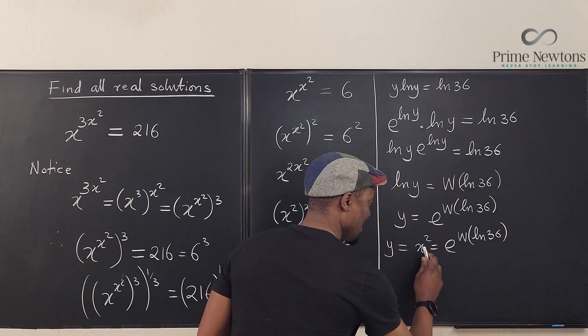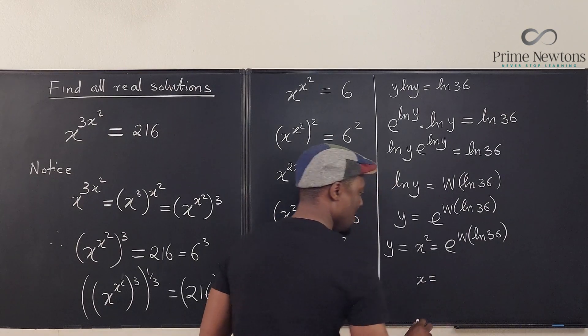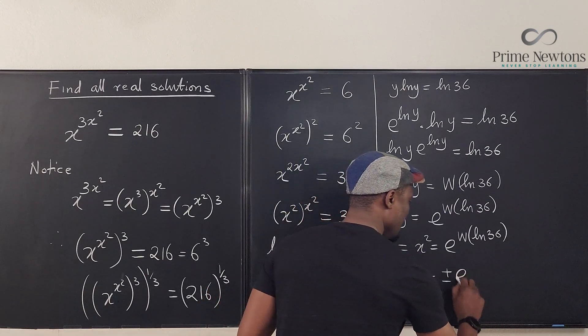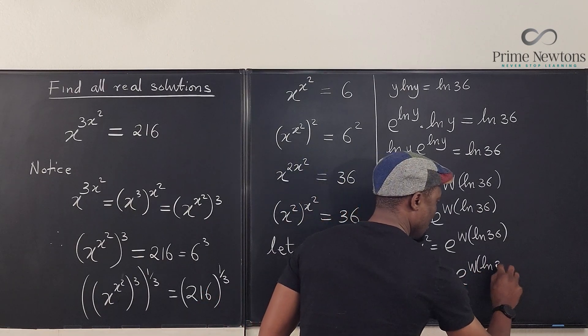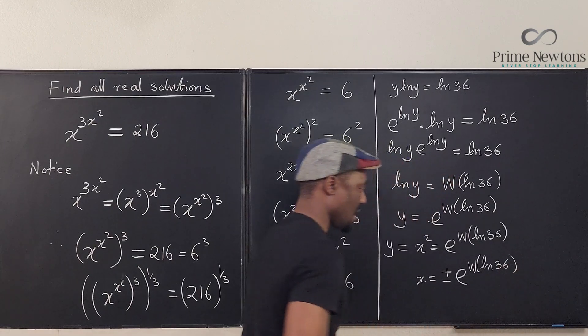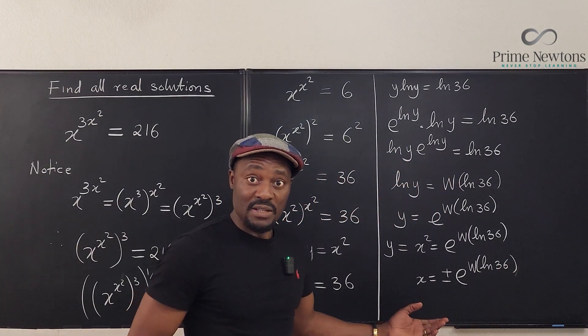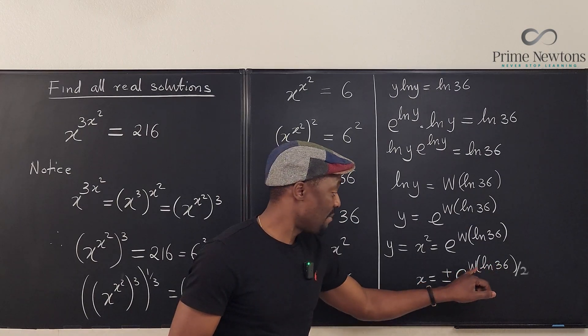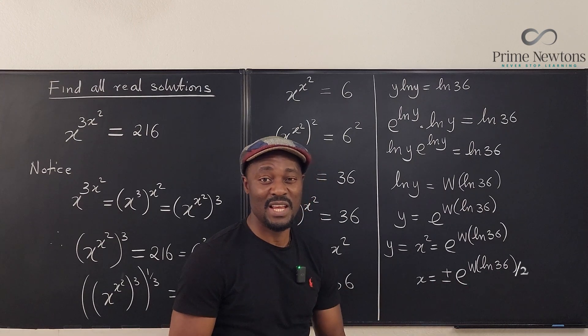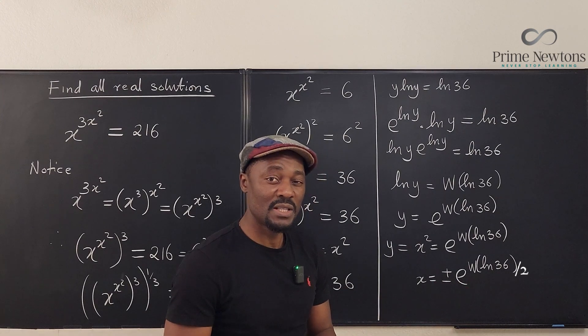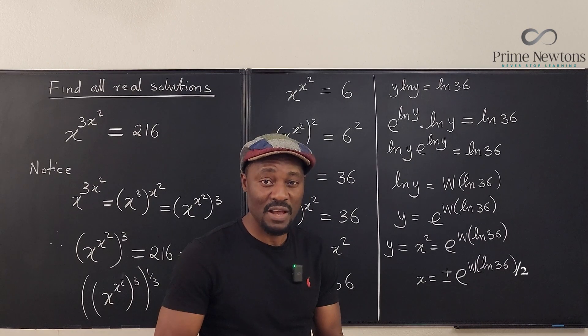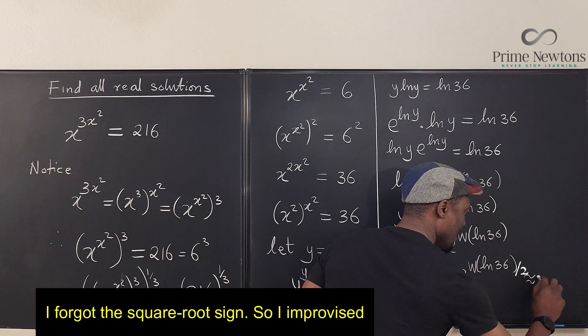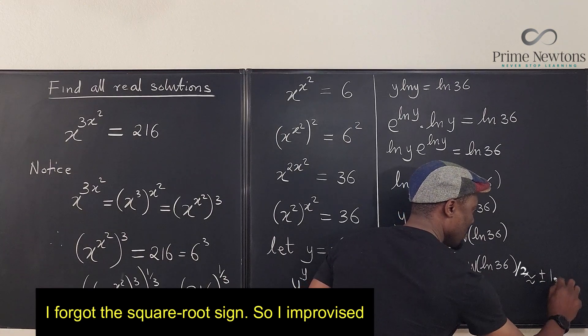We're going to say that if we take the square root of both sides, we're going to have x will be equal to plus or minus of e to the w of the natural log of 36. And that will be your answer. You plug this in to use any calculator that is capable of computing this. And then you will see your answer is about plus or minus 1.77 something. Let's just stop there. So we can say this is approximately plus or minus 1.77.